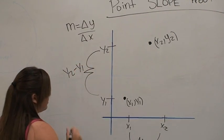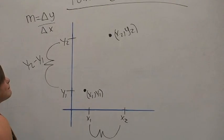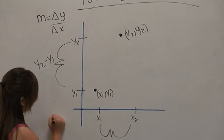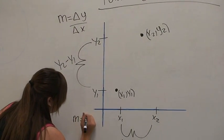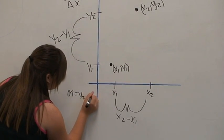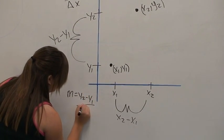We then want to plug these changes into our original slope function. m equals the change in y, which is y2 minus y1, over the change in x, x2 minus x1.